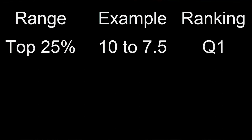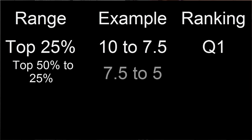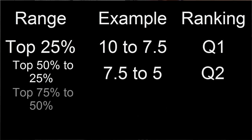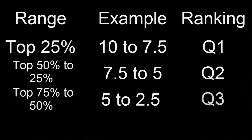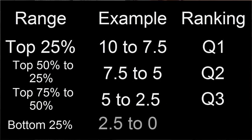Journals in the next 25% — with impact factors from 5 to 7.5 — receive a Q2 ranking. Journals from the 50th to 75th percentile, with impact factors from 2.5 to 5, receive a Q3 ranking. Finally, journals in the bottom 25%, with impact factors from 0 to 2.5, are given a Q4 ranking. That is how journals are ranked into Q1, Q2, Q3, and Q4.